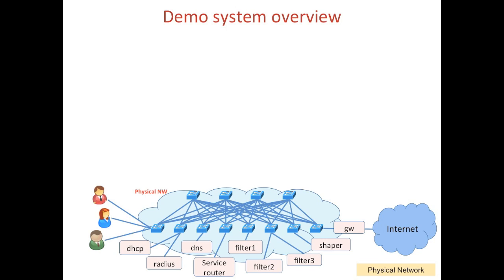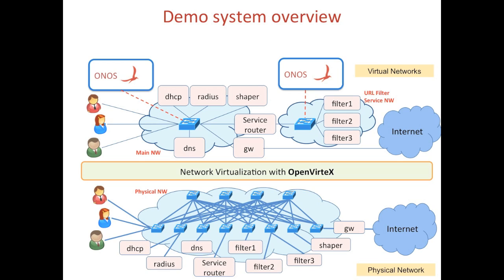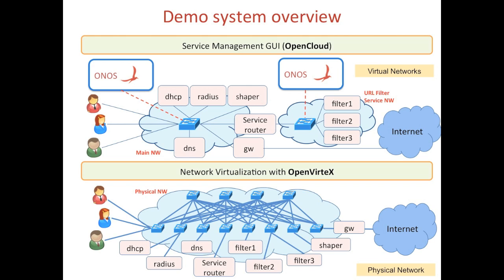This is a system architecture overview for this demo. We have a physical topology having 12 switches, emulated by Mininet, and on top of it, using a network virtualization software, OpenVirtex. We made two virtual networks: a main network and a URL filter service network. Each virtual network is managed by ONOS, and we deployed a management GUI on top of them to manage subscribers and services. This GUI layer is part of a cloud management platform, OpenCloud. We will show two main functions, service composition and service scalability, on this environment.